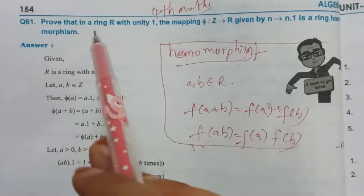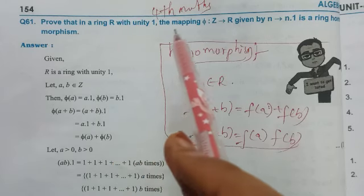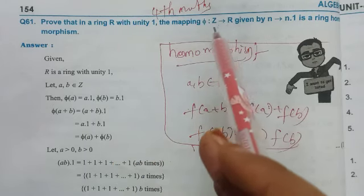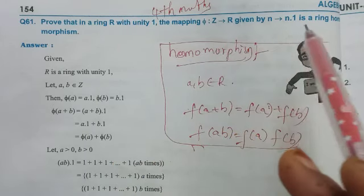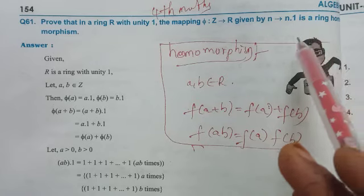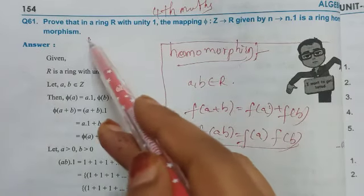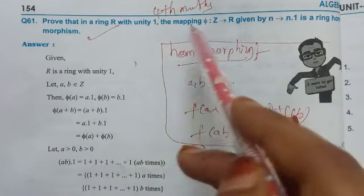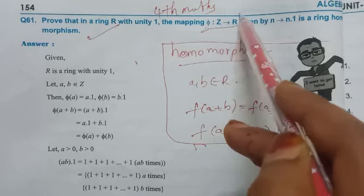So, we have a ring R with unity 1, and the mapping phi from Z to R given by n maps to n.1 is a ring homomorphism. Basically, here the phi function is a definition.